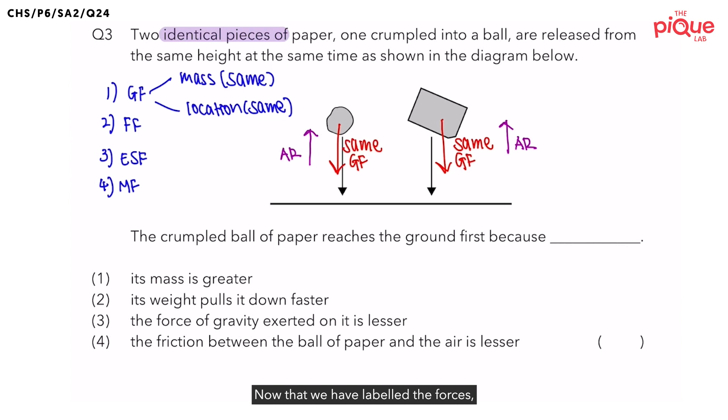Now that we have labeled the forces, let us identify what is the change variable between the crumpled piece of paper and the normal piece of paper. I know most of you will tell me one is crumpled while the other is not. However, this is not the science concept that the question is testing you on. Instead, you will realize that they are testing you on the concept of exposed surface area.